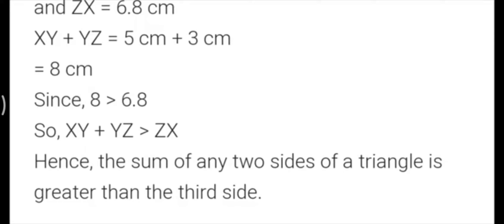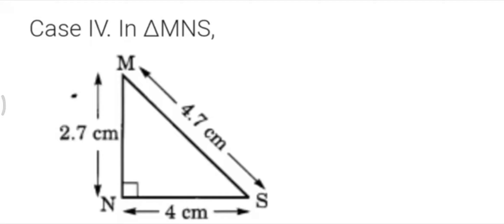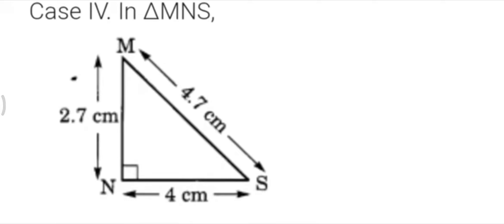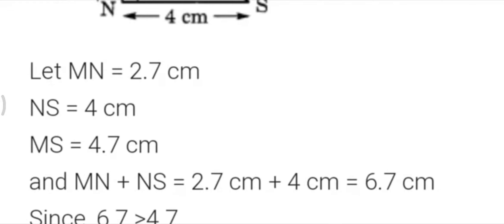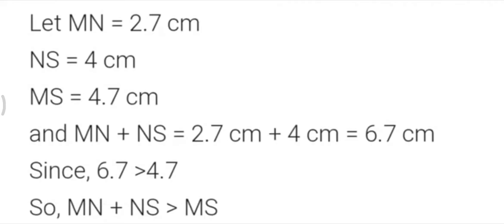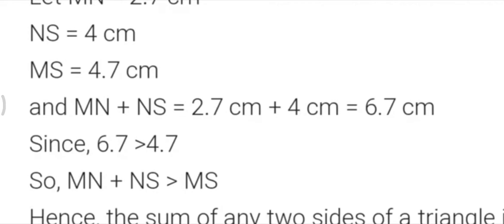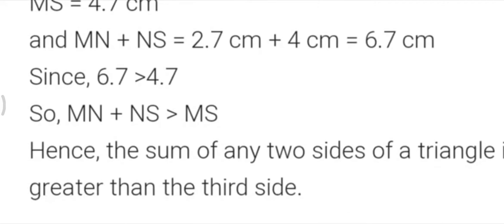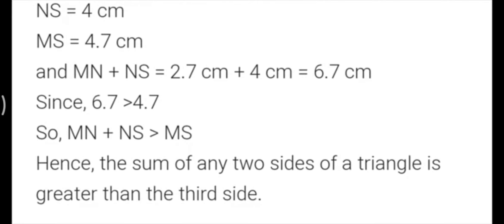Now case 4. In this I have drawn triangle MNS. MN is 2.7 cm, NS is 4 cm, and MS is 4.7 cm. Note that your triangle's measurements may differ from mine — whatever you have drawn, write those measurements. Adding MN plus NS equals 6.7 cm. Again the sum of two sides is greater than the third side. Hence the sum of any two sides of a triangle is greater than the third side.